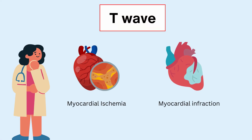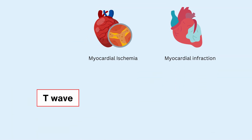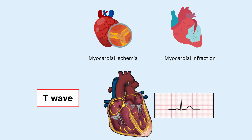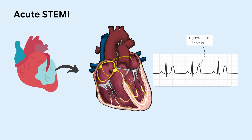What if there is myocardial ischemia or an infarction? The changes in T-waves observed in acute myocardial infarction and myocardial ischemia occur due to alterations in the repolarization patterns of cardiac cells in response to ischemic injury. In the early stages of AMI, there's a rapid and intense repolarization of cardiac cells in the affected area. This can lead to tall and peaked T-waves known as hyperacute T-waves, which indicate acute myocardial injury and are often among the earliest signs of MI on the ECG.